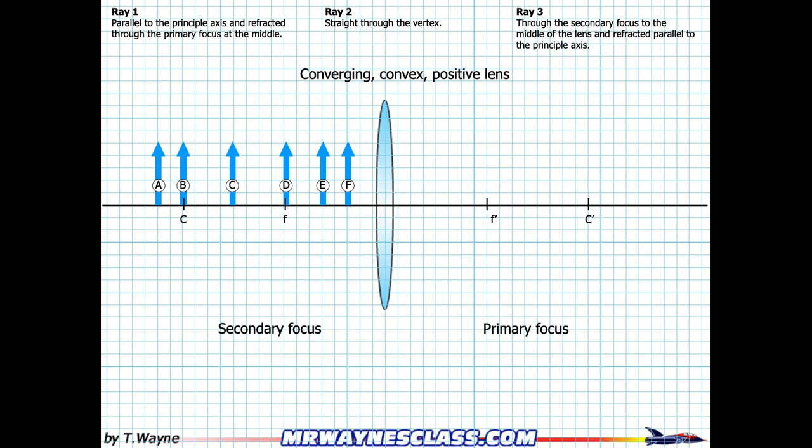This is the solution to the ray tracing diagrams for a converging convex positive lens. I've got three different rays I'm going to go through, picking two at a time to show how it all works. You can see on the lens where I've got my center, my focus, and F primes and C primes — they just mean a different focus, either primary or secondary. I've also identified the primary focus side and the secondary focus side; see the help videos from the worksheet to figure out how that's done.